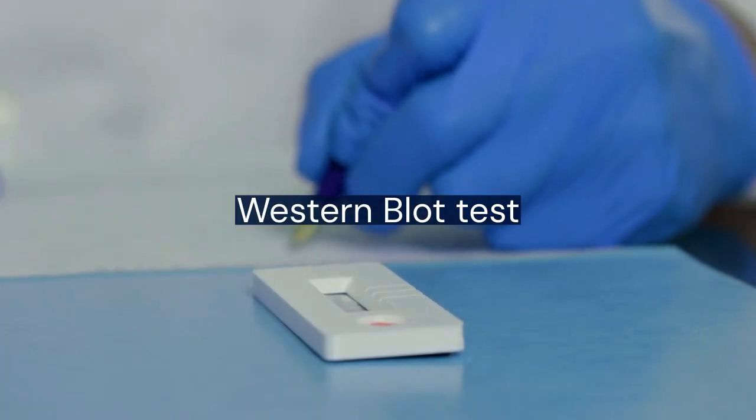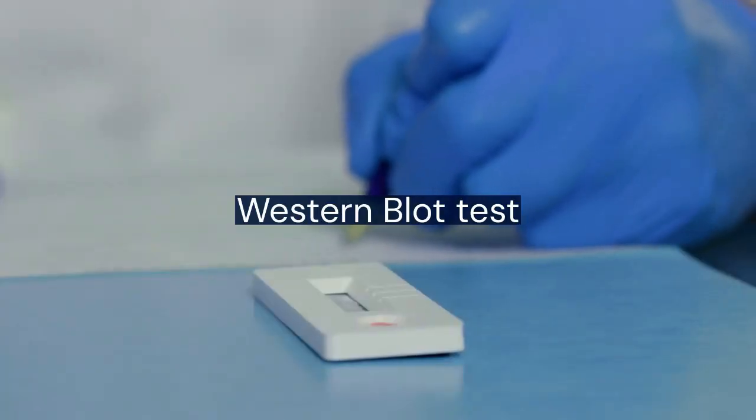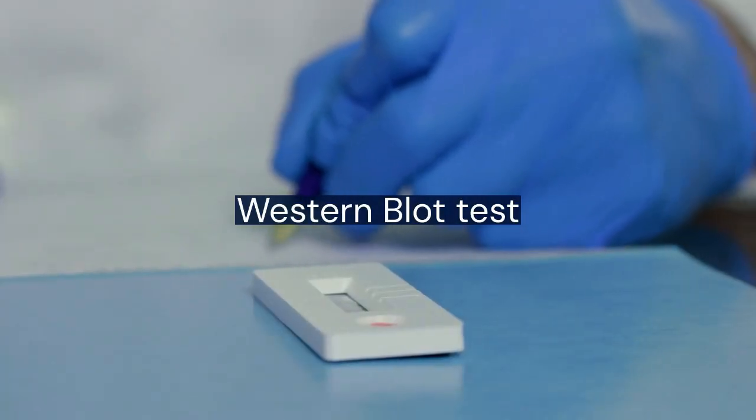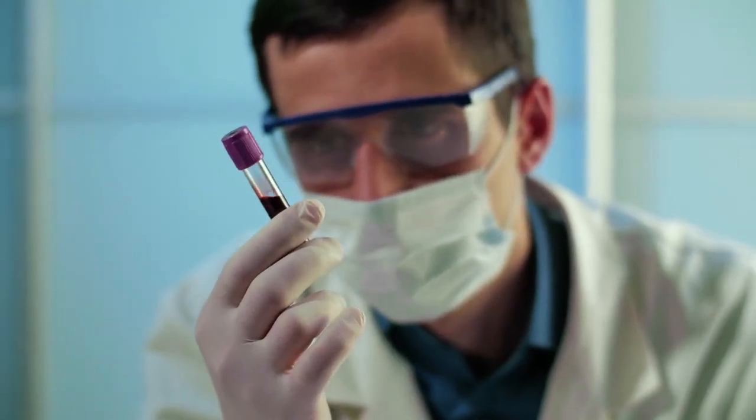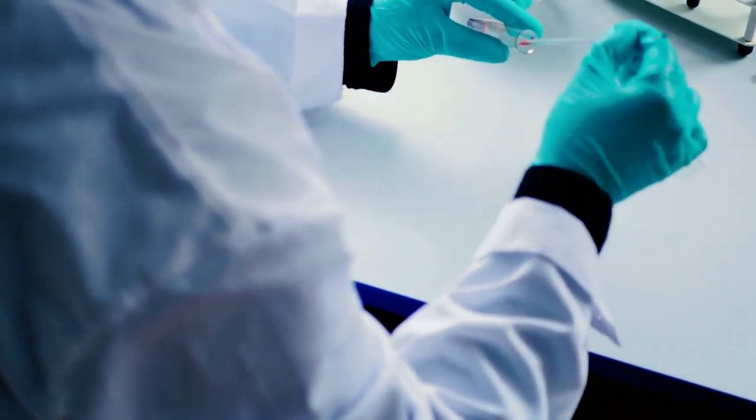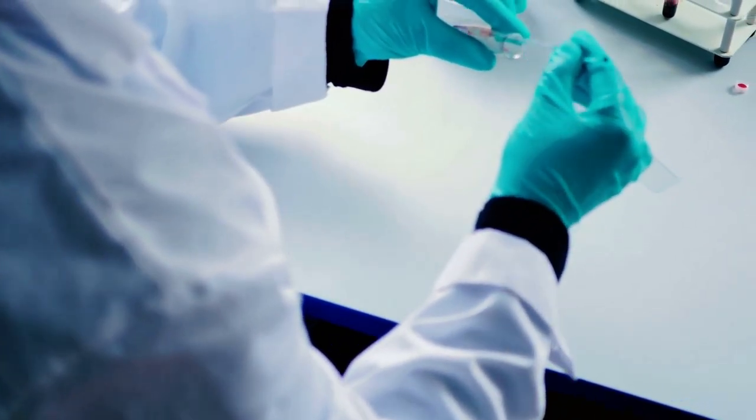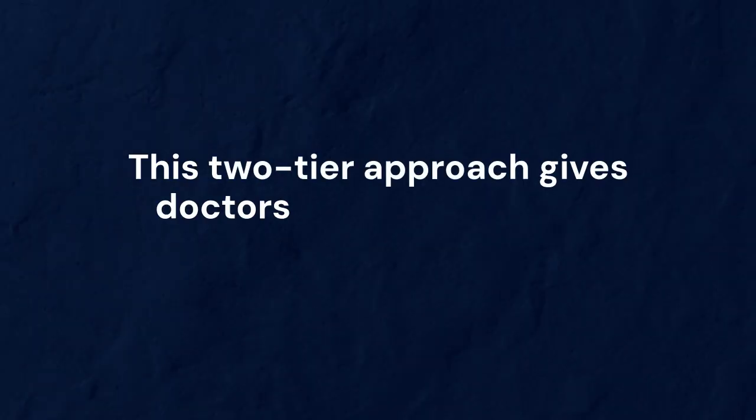If that comes back positive, or sometimes even borderline, they'll often follow up with what's called a Western blot test. That one's more specific. It looks for antibodies against several different proteins of the Lyme bacteria. It helps confirm the diagnosis and avoid false positives. This two-tier approach gives doctors more confidence.